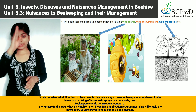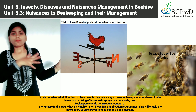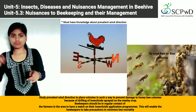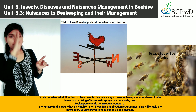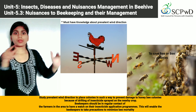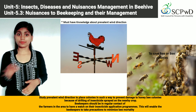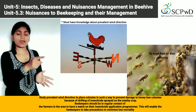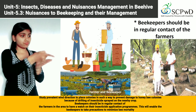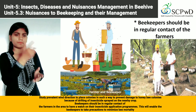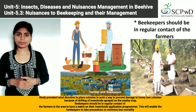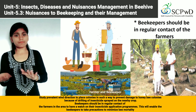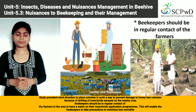Study the prevalent wind direction to place colonies in such a way as to prevent damage to honeybee colonies due to drifting of insecticide sprayed on nearby crops. Beekeepers should be in regular contact with the farmers in the area to monitor their insecticide application programs. This will enable beekeepers to take precautions to minimize bee mortality.